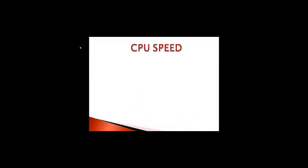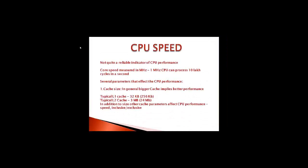Similar is the case of CPU speed and CPU's performance. CPU speed is not quite a reliable indicator of CPU performance. The core speed is measured in megahertz. One megahertz CPU can process 10 lakh cycles in a second. But there are several parameters that affect the CPU performance. Cache size. In general, bigger cache size implies better performance.